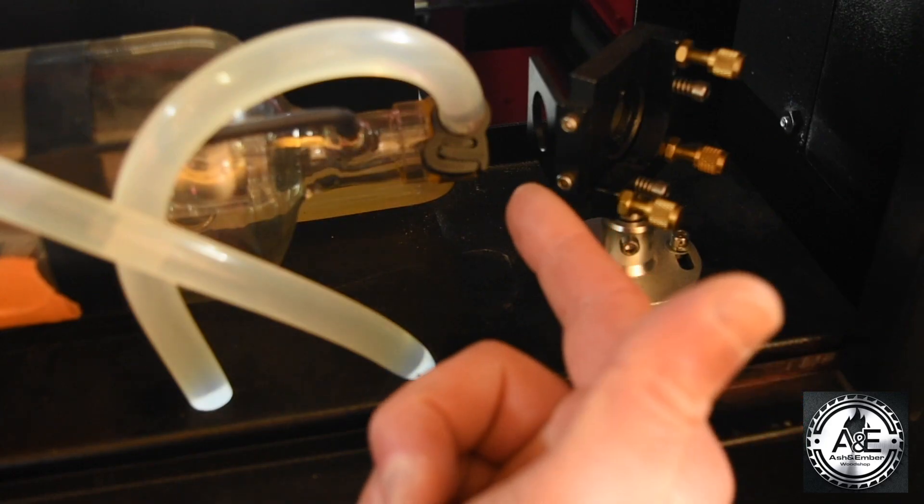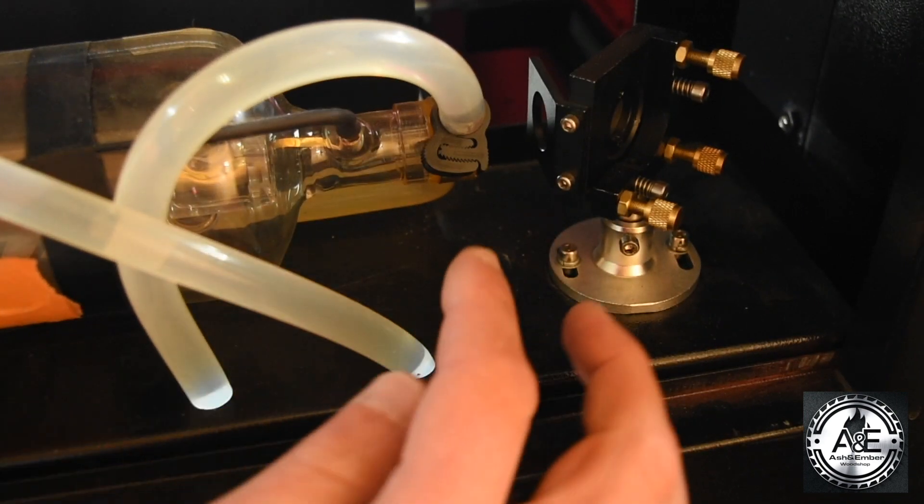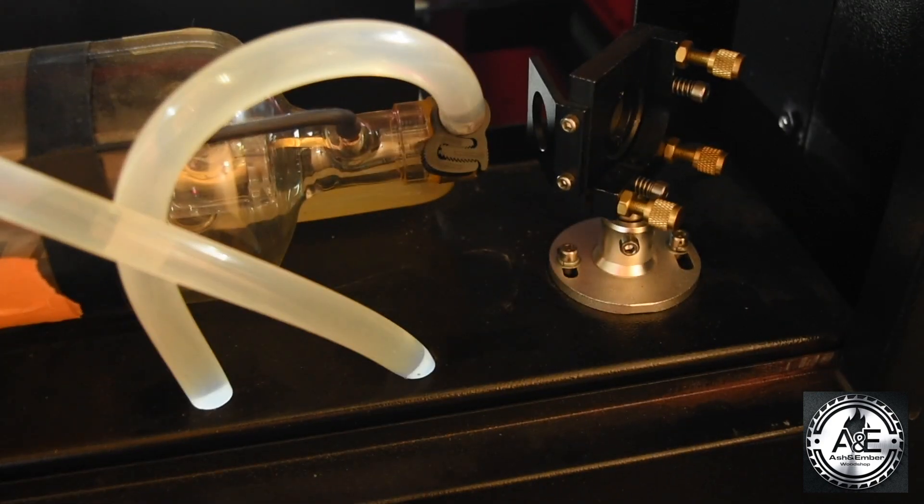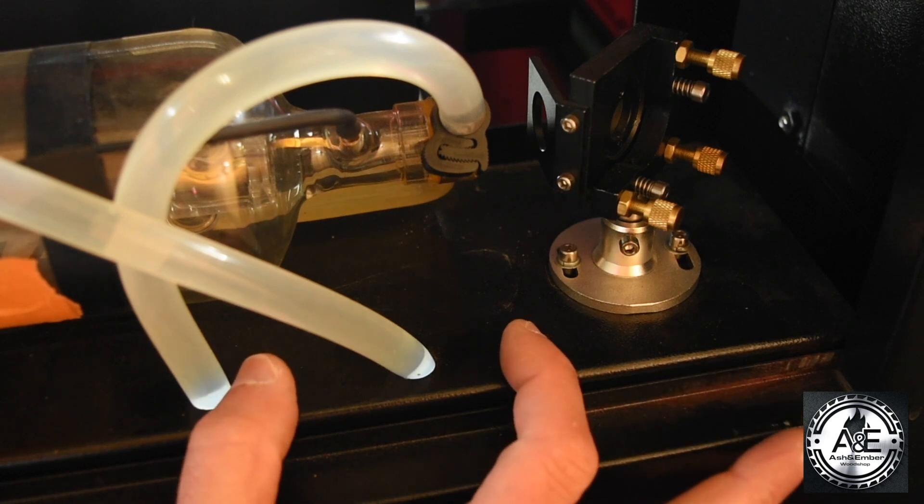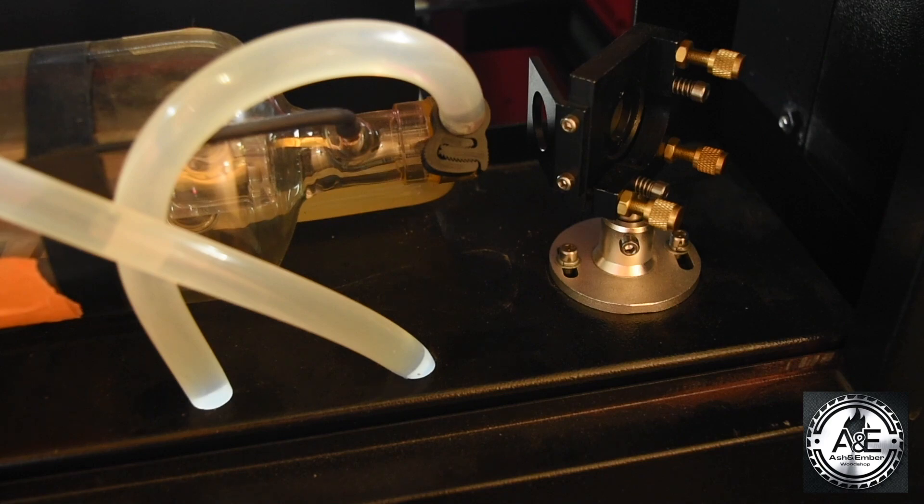Now once you've made sure that your laser tube is not right up against mirror one here, you're going to want to make sure that the orientation of the tube is not having these tubes rest right on the bracket or the housing of the laser tube here. You don't want this to be crimped or any type of pressure that's going to be on the water line.